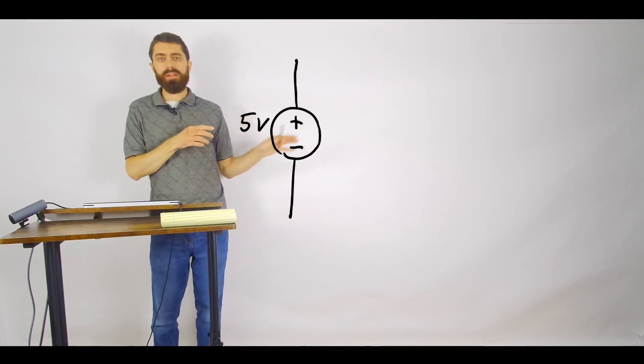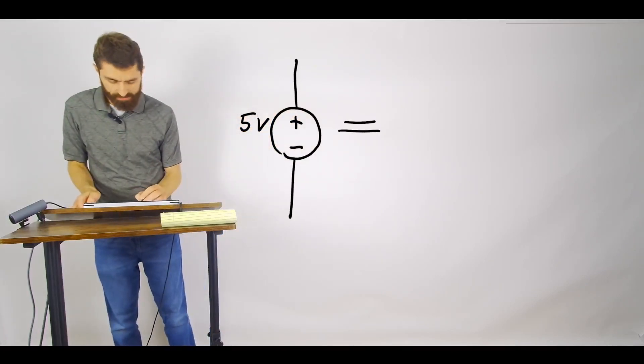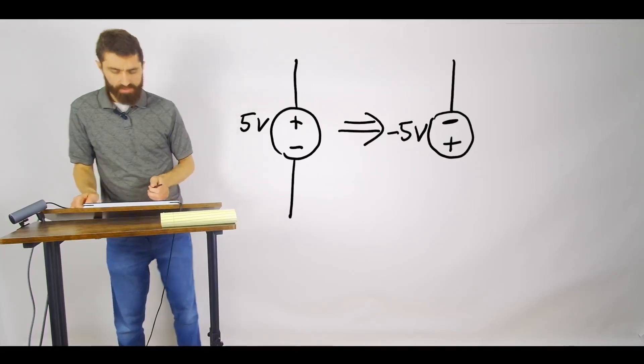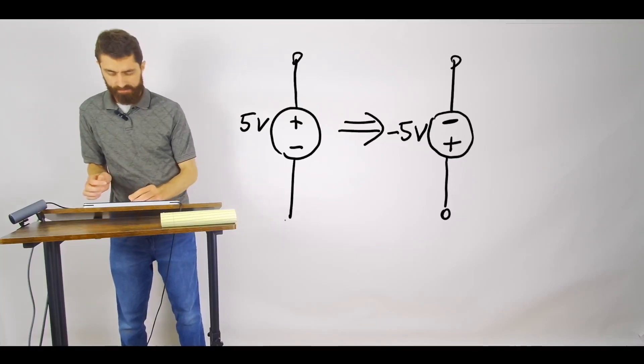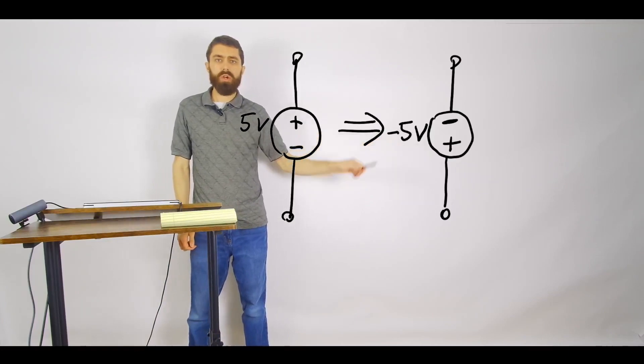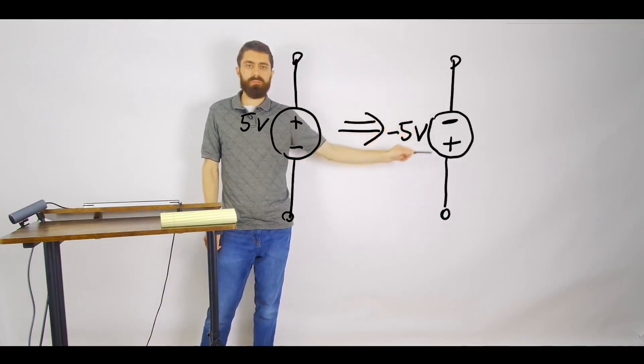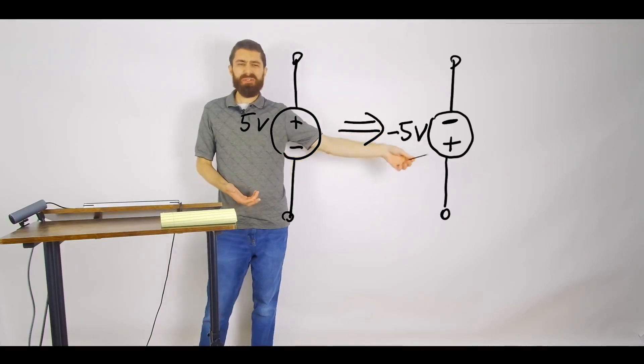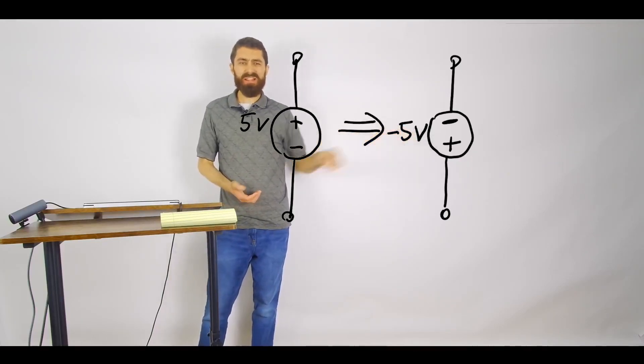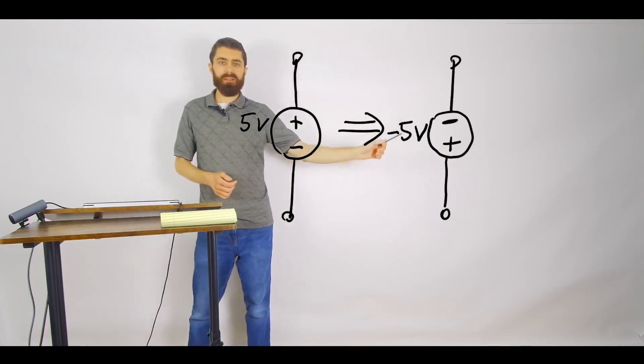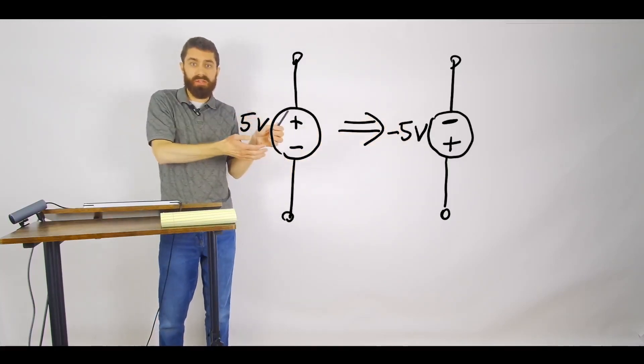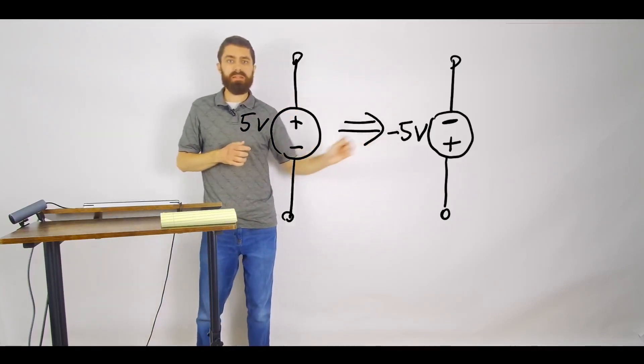An alternative way of writing this would be this. You could redraw this and say that here we have a source with plus at the bottom there but say that it's negative 5 volts. And so it's kind of confusing to draw or specify it like that. But these actually mean the same thing because negative 5 volts with this orientation basically means 5 volts with this flipped with the plus on top. So both of these mean the exact same thing.